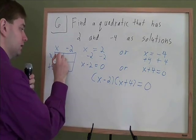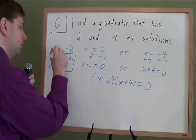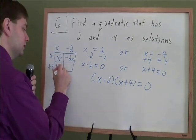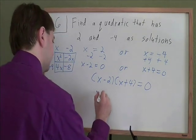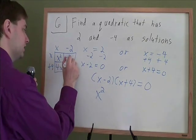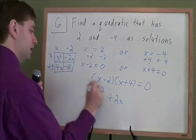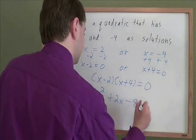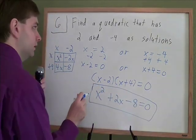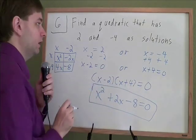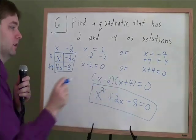x times x is x squared. x times minus 2 is minus 2x. 4 times x is 4x. 4 times minus 2 is minus 8. So we have x squared. 4x and minus 2x, well, 4 minus 2 is plus 2x, and then minus 8. All that is equal to 0, and that's what we're looking for. This is a quadratic that when you solved it, you would get 2 and negative 4 as solutions. We basically just did the factoring and everything backwards on this problem.